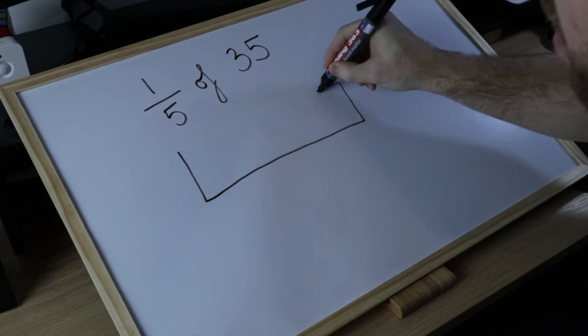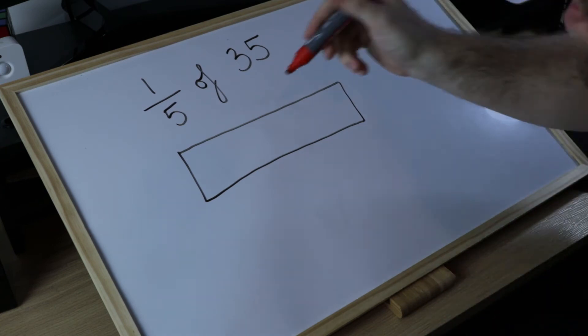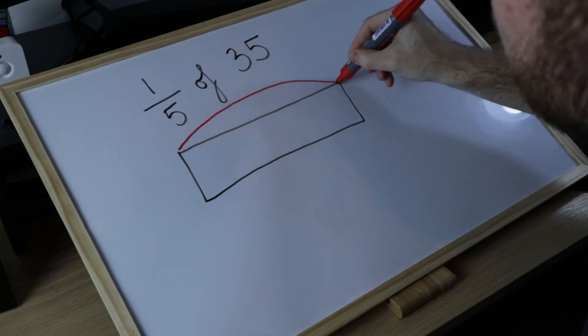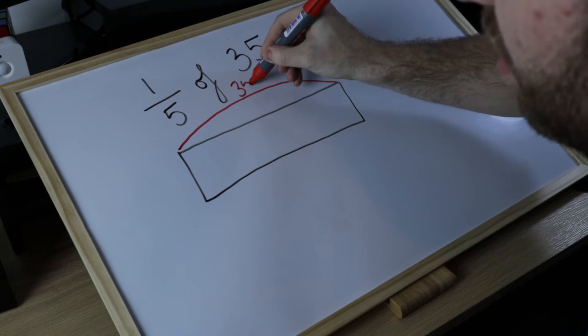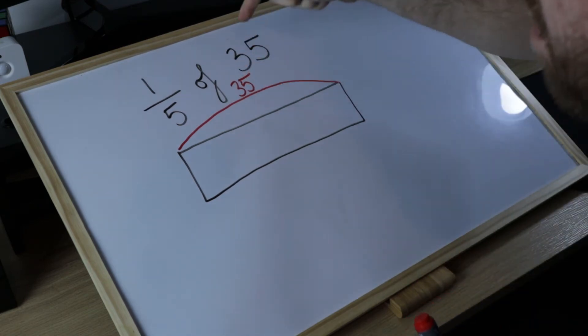The first thing we'd encourage the child to do is draw out one bar which is the whole amount, and I would encourage the children straight away to label this whole amount as 35. This is our quantity. We have 35 and we're looking to find one-fifth of this number.